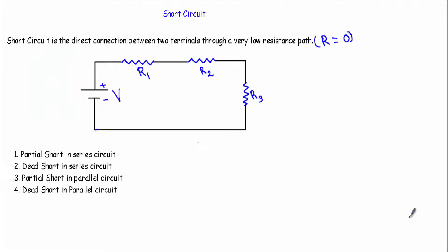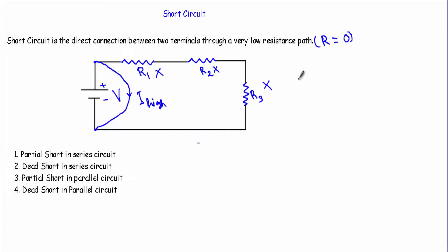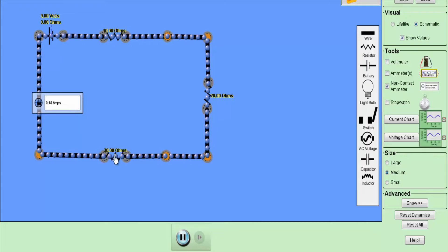Now let me talk about the second type: dead short in a series circuit. A dead short means all the components in the series circuit get eliminated by a short circuit. If I connect the two terminals across the voltage source with a very low resistance path, the series combination of R1, R2, and R3 will be discarded from the circuit. With all resistances removed, a very large amount of current will flow, and if we don't use any protective device like a fuse or circuit breaker, severe damage can occur.